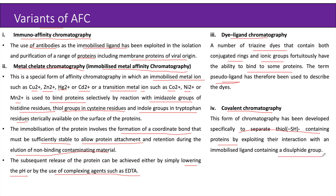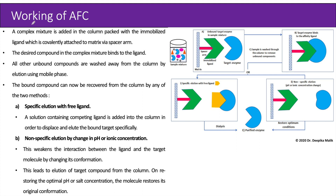Now let us see the working of affinity chromatography in detail. A complex mixture is added into the column packed with the immobilized ligand, which is covalently attached to the matrix via a spacer arm. The matrix has a spacer arm to which an immobilized ligand is attached. These three components — matrix, spacer arm, and immobilized ligand — represent a single particle of the stationary phase. When the sample is loaded onto the column, the desired compound in the complex mixture binds to the ligand, whereas all other unbound compounds are washed away using the mobile phase.